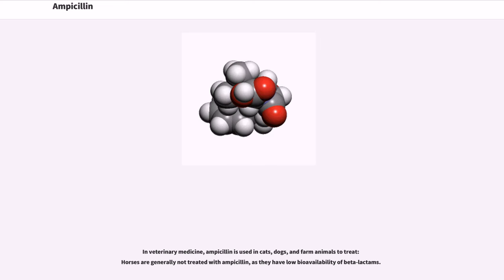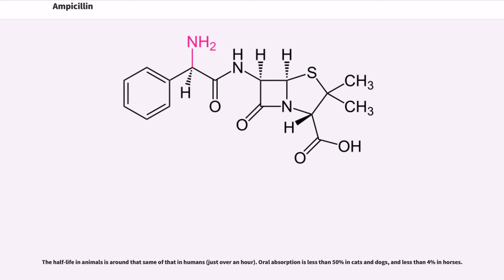In veterinary medicine, ampicillin is used in cats, dogs, and farm animals. Horses are generally not treated with ampicillin, as they have low bioavailability of beta-lactams. The half-life in animals is around that same as that in humans, just over an hour. Oral absorption is less than 50% in cats and dogs, and less than 4% in horses.